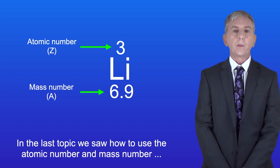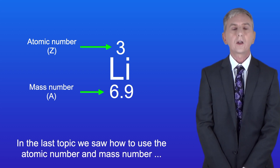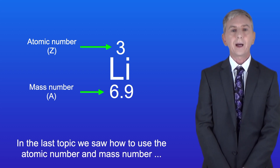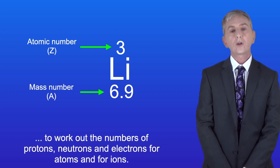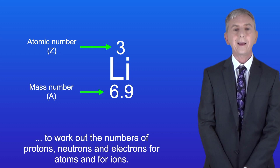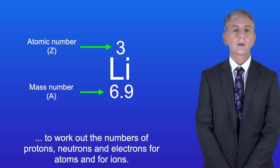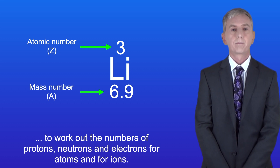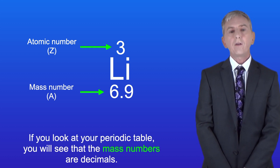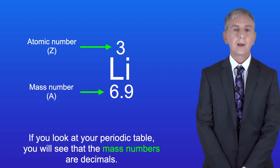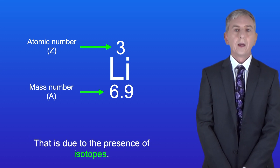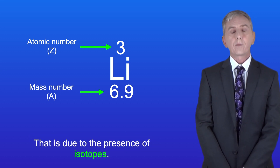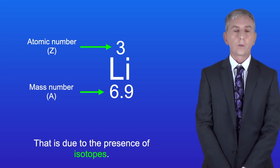In the last topic we saw how to use the atomic number and mass number to work out the numbers of protons, neutrons and electrons for atoms and for ions. Now if you look at your periodic table you'll see that the mass numbers are decimals and that's due to the presence of isotopes.